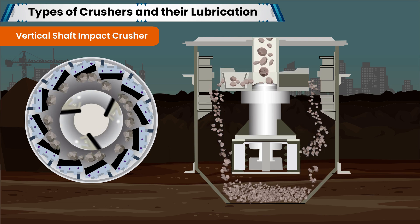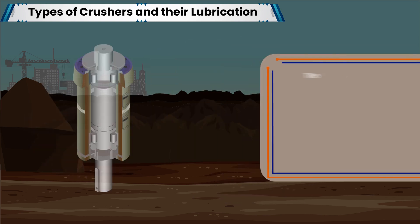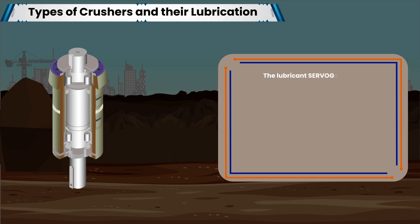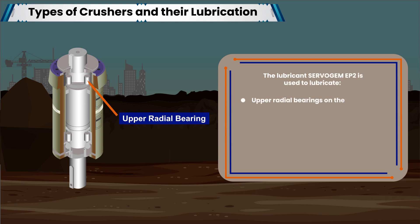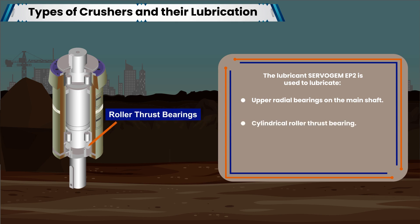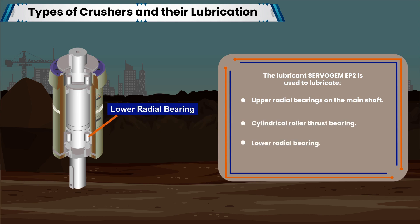The lubricant Servo GEM EP2 is used to lubricate upper radial bearings on the main shaft, cylindrical roller thrust bearing, and lower radial bearing.